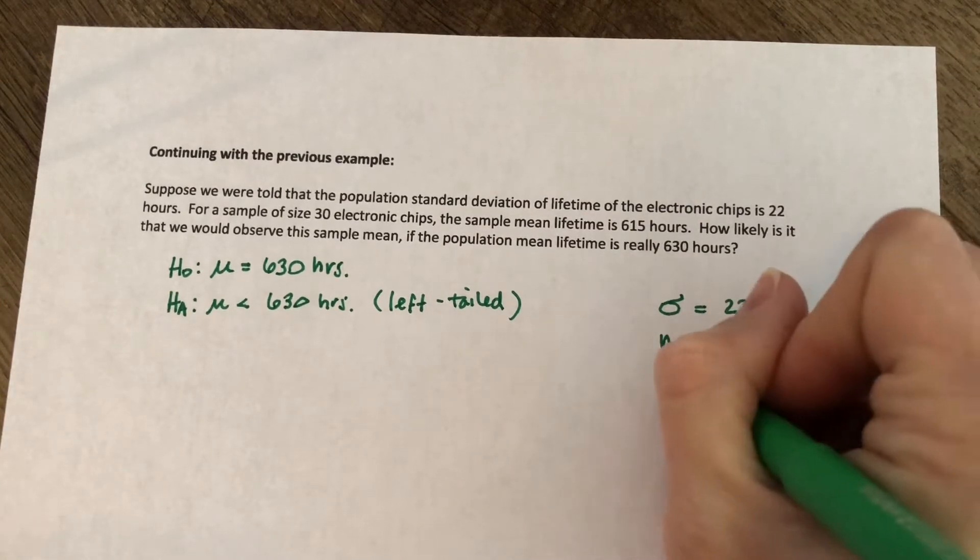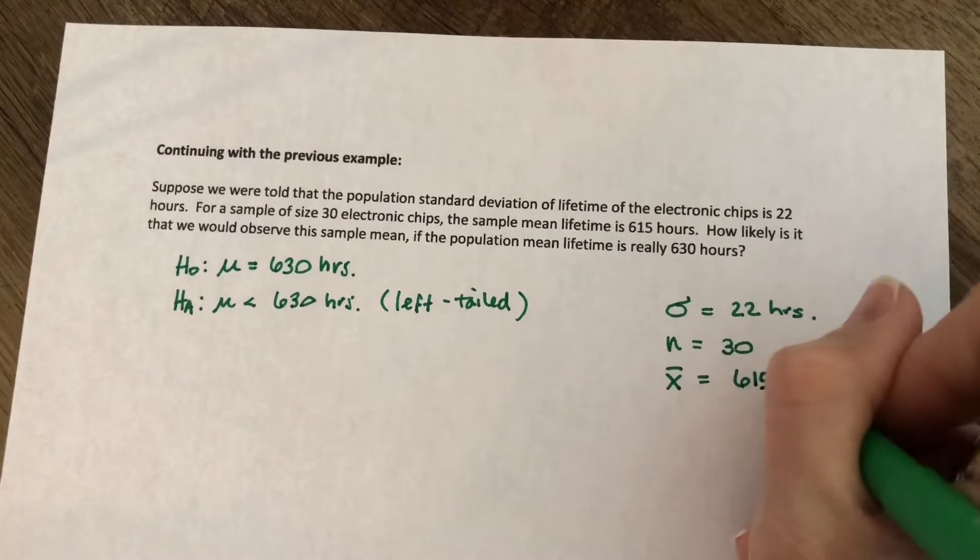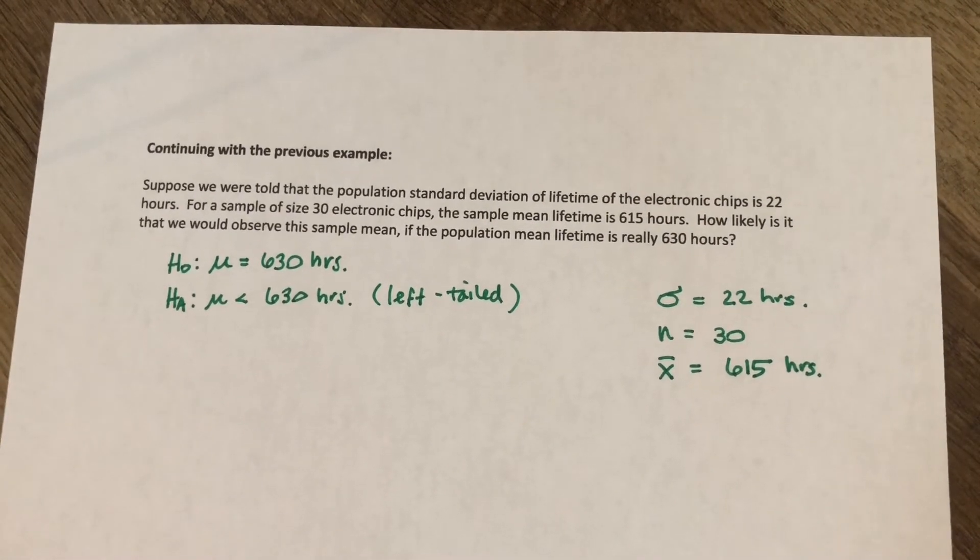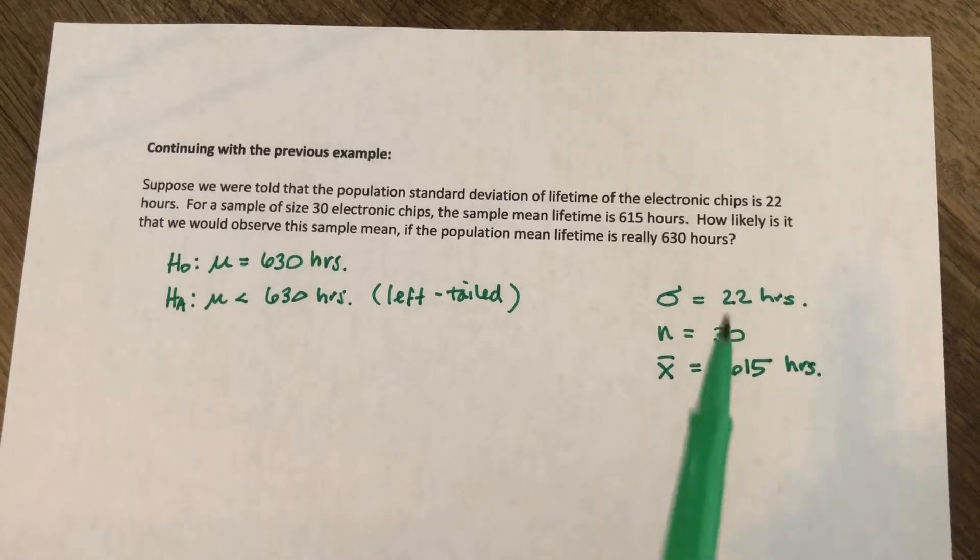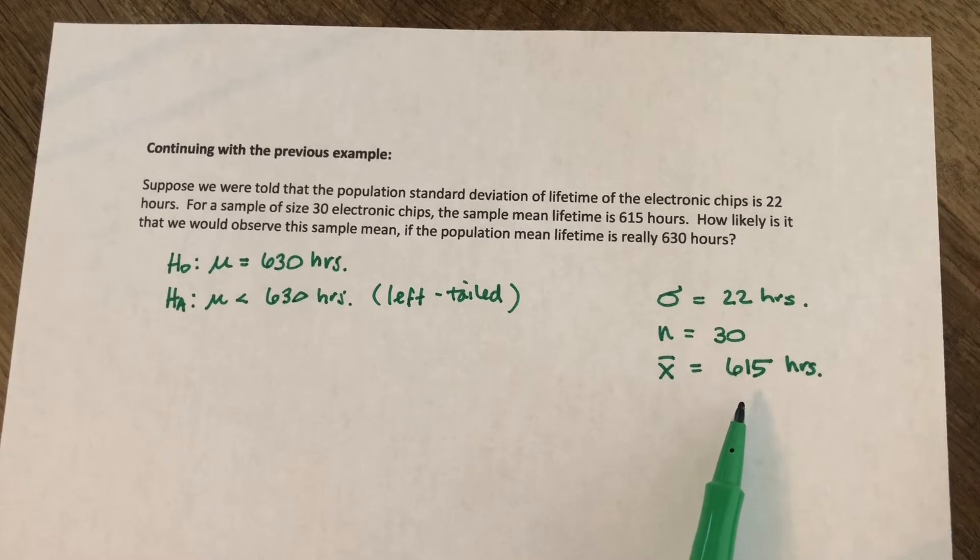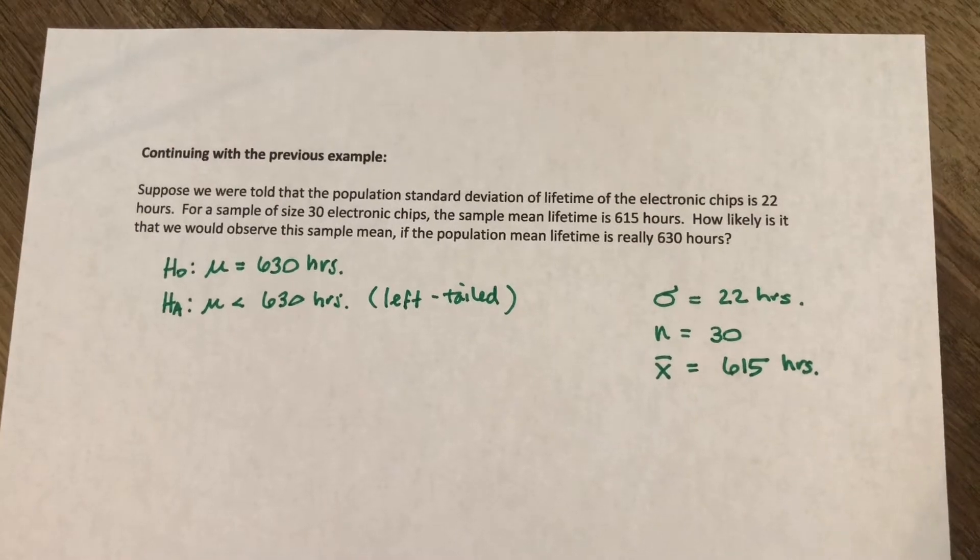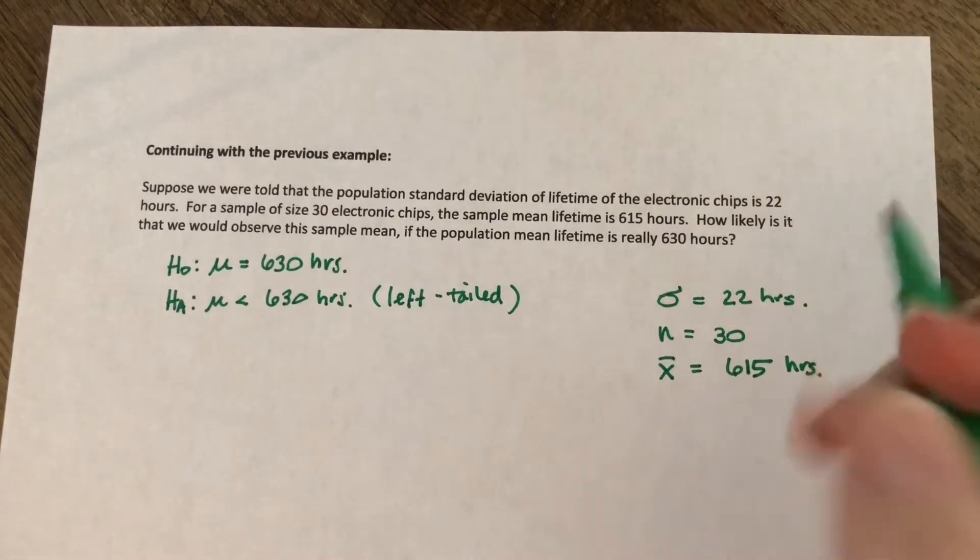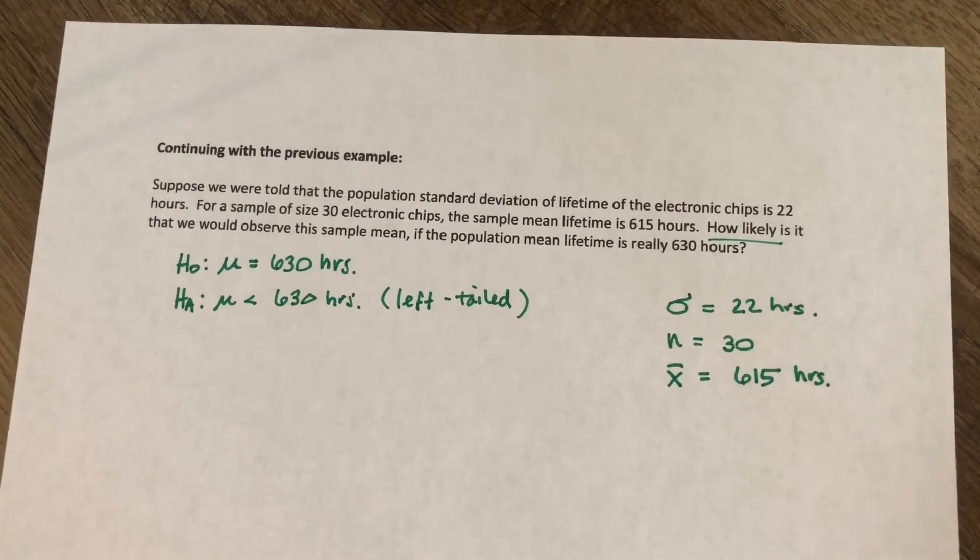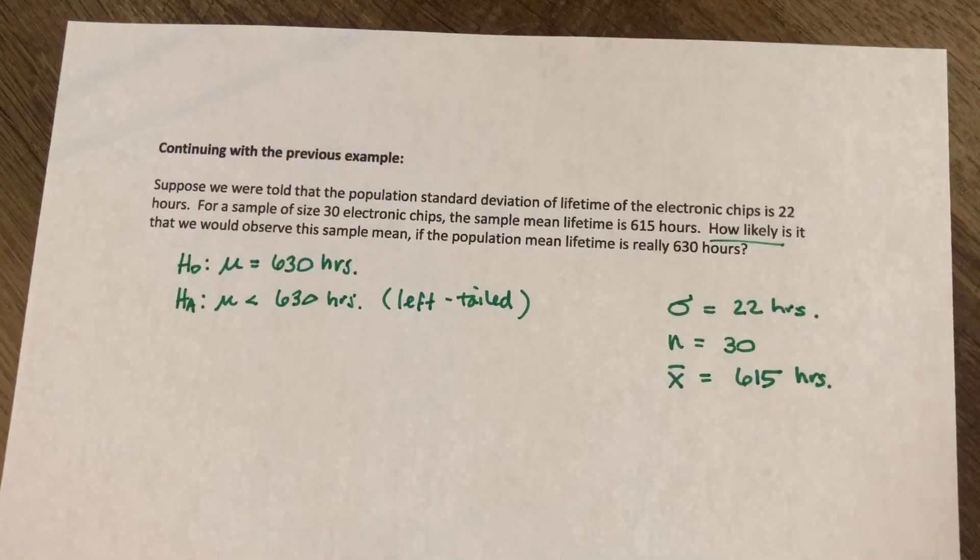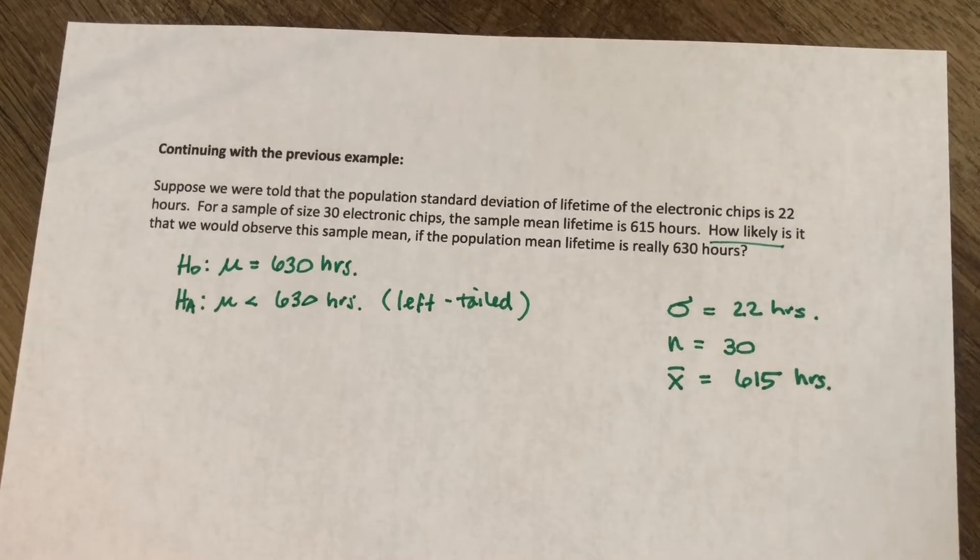So we looked at 30 different chips and we found a mean lifetime of 615 hours. So the sample mean x bar was 615 hours. And so what we're trying to figure out is how likely is it that we're going to observe a sample mean of 615 hours if our sample size is 30 and the population standard deviation is 22 hours. How likely should sound to you like a probability question.